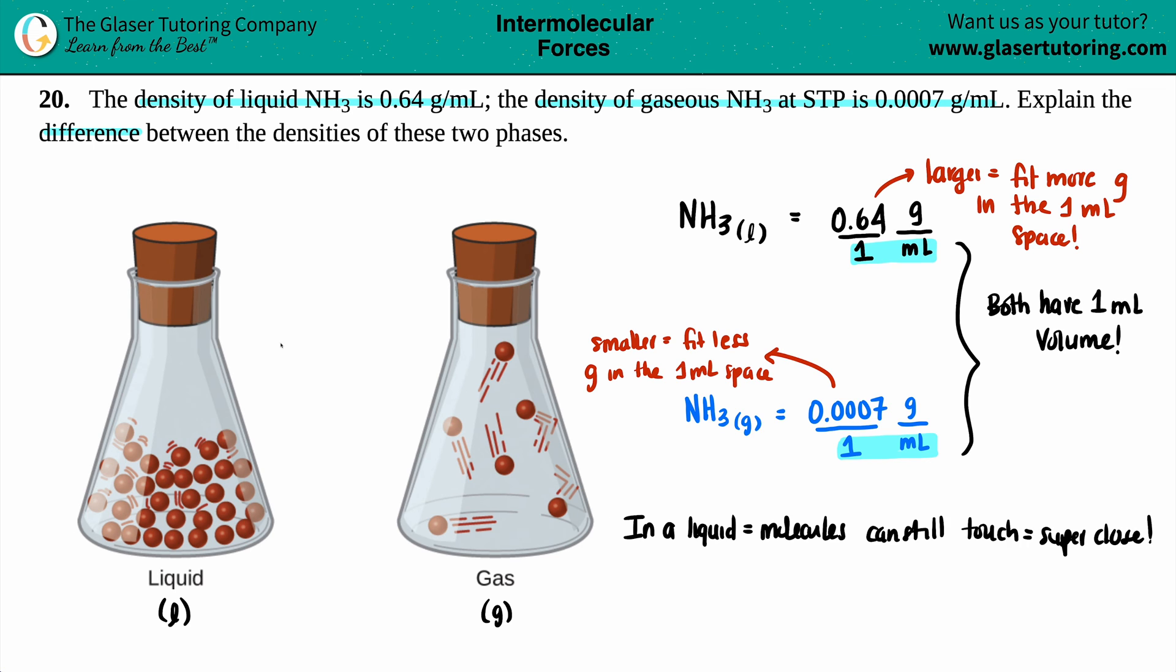So if those molecules still have the ability to touch, they are super close. And in a one milliliter container, you can fit more molecules. Clearly if we add up all these values, the number of red dots that are here are clearly more than the number of red dots in the gas. That's because you could fit more molecules. And if you could fit more molecules, you will have more mass. And that's why for this, the number is 0.64 grams.